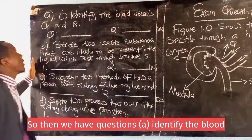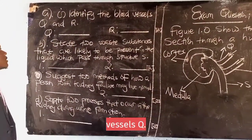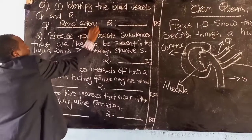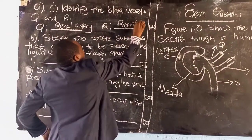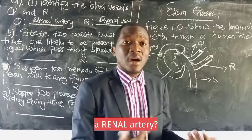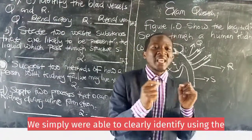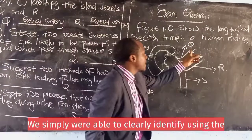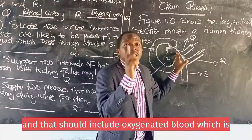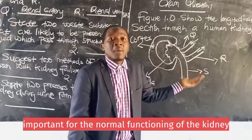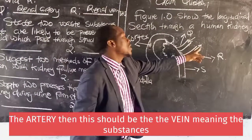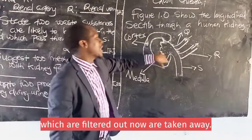On question A, we are asked to identify the blood vessels Q and A. Q is the renal artery, and A is the renal vein. We were able to clearly identify these using the arrows. The arrow showing incoming substances — including oxygenated blood important for the normal functioning of the kidney — indicates the artery. The other arrow, showing substances that have been used being taken away, indicates the vein.